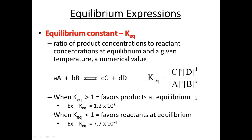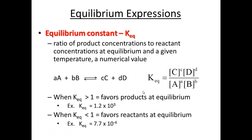Today we're going to be talking about equilibrium expressions. When a reaction goes both in the forward direction and in the reverse direction, when those rates are equal, we're at equilibrium. At that point, we can find this constant where the amount of products goes on top versus the amount of reactants on the bottom. This ratio of products over reactants remains constant at a given temperature.